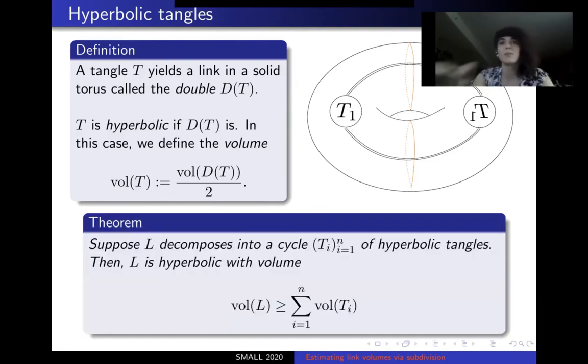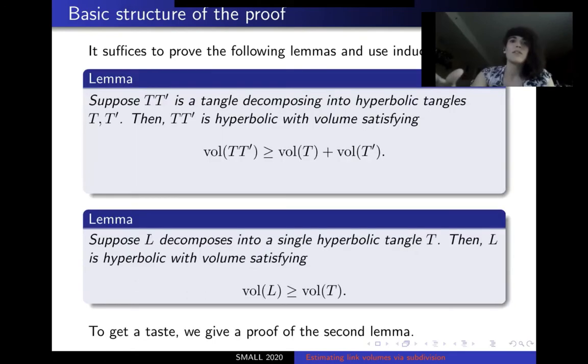We use this to prove the following theorem, that if a link decomposes into a collection of hyperbolic tangles, then the link itself was hyperbolic and its volume is lower bounded by the sum of the volumes of the tangles. And this is kind of a fundamentally new kind of result, in that this is very inductive and looks at very local sections of it, which is kind of different in flavor from other lower bounds that are known for link volumes.